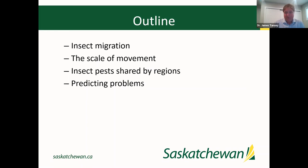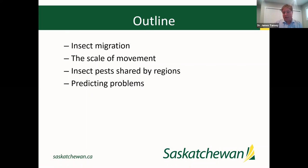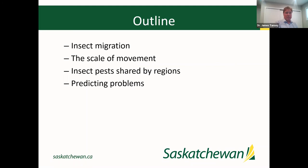A brief outline of what we're going to talk about today, including insect migration with some specific examples. These will include the scale of movement, which is really quite striking. We'll also talk about insect pests shared by regions in the context of insect migration, and how this factors into allowing the Canadian prairies to predict problems — methods shared with jurisdictions around the world, including our American counterparts.